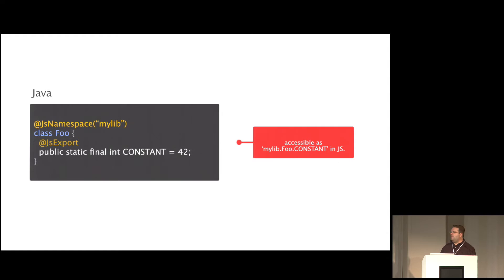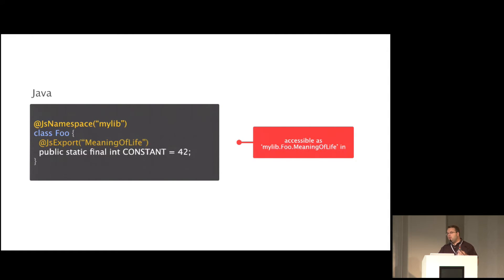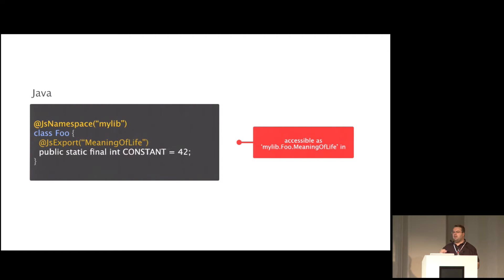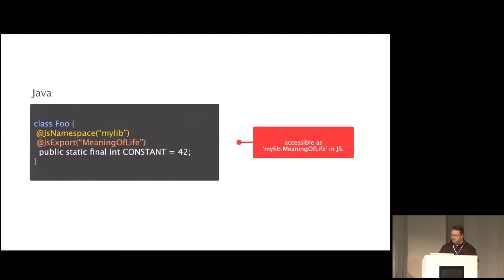Likewise, if you have a public static final field called CONSTANT and you put @JSExport on it, you can refer to it in JavaScript as mylib.foo.CONSTANT. You can also rename it — the first parameter of @JSExport lets you give an alternative name, so it would be available as mylib.foo.MEANINGOFLIFE. And sometimes you don't want it under the Foo class at all — you can move the @JSNamespace annotation down to the static field itself, making it directly available as mylib.MEANINGOFLIFE.